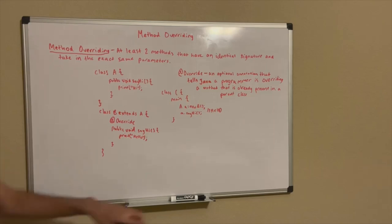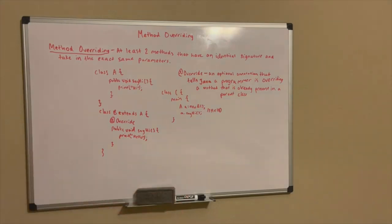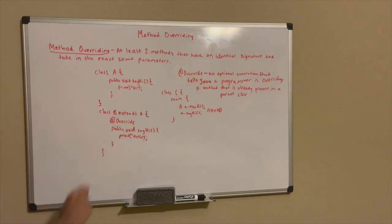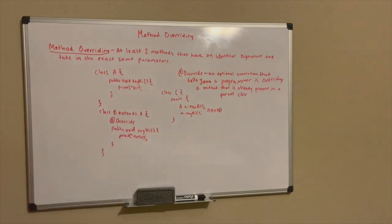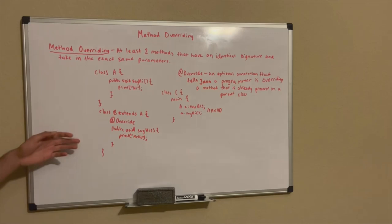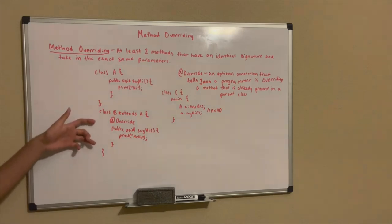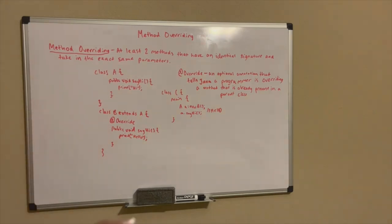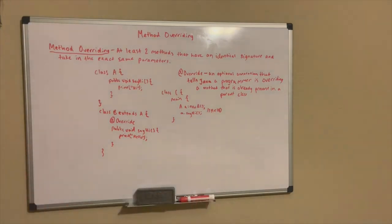That's pretty much how method overriding works. To recap: method overriding has at least two methods that have an identical signature and take in the exact same parameters. We had identical methods that took in the same parameters and printed two different things, but it only prints hello because we overrode the method from the parent class.